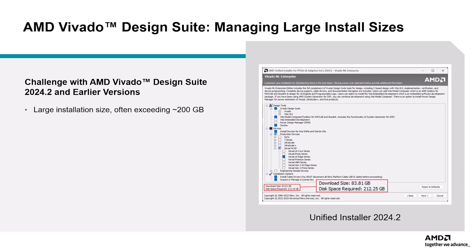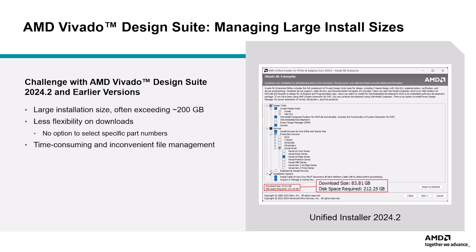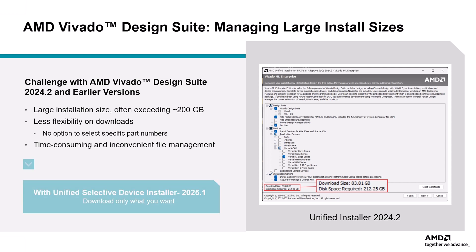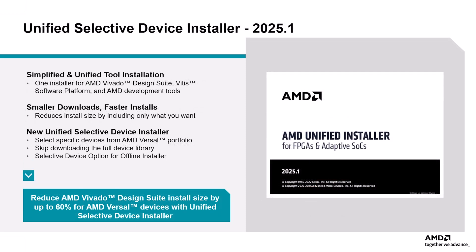For users with limited bandwidth or storage, downloading and managing this large package can be time-consuming and inconvenient. To address this, AMD is introducing the Unified Selective Device Installer in the 2025.1 release, which is a smarter and more efficient approach that lets you download only the devices you need, streamlining installation and making your workflow faster and more efficient.